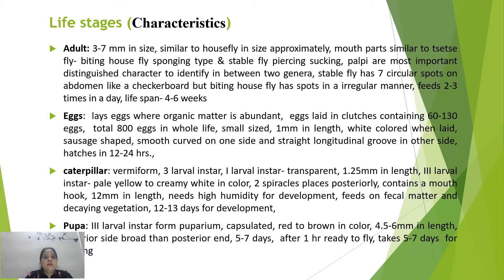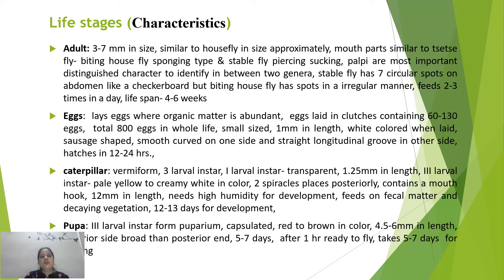The pathogen they transfer is Habronema in host animals like domestic and wild mammals such as cattle, horses, dogs, and rarely humans. They cause painful bites, allergic reactions, and blood-borne zoonotic diseases. As holometabolous insects, they have all four stages. Adults are medium sized, 3 to 7 mm, similar to the house fly but with piercing and sucking mouthparts, unlike the house fly's sponging type. Stable flies have seven circular spots on the abdomen in a checkerboard pattern, while biting house flies have spots in an irregular manner.